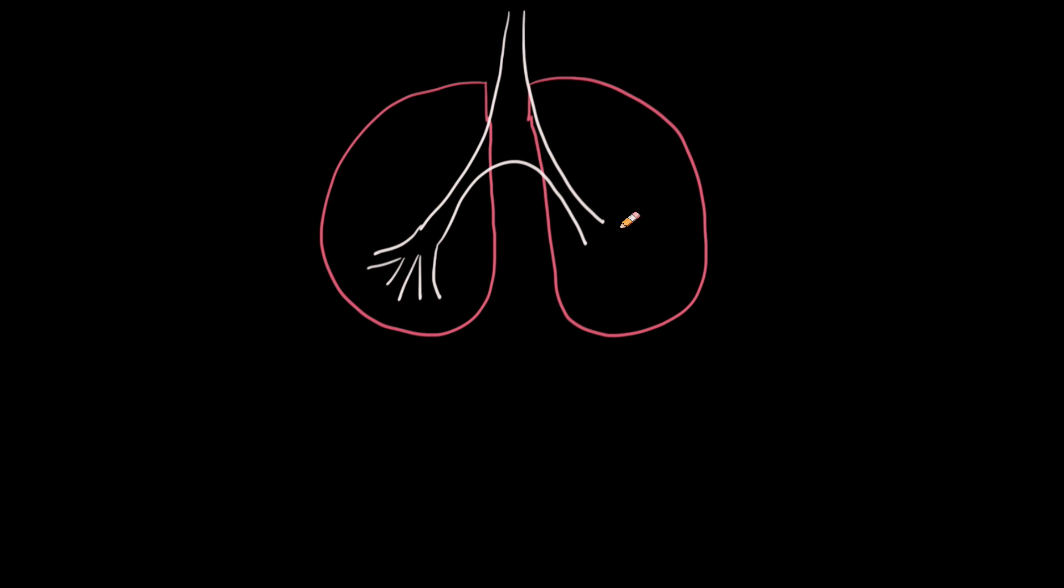You see me making the main airways and now drawing our bronchioles, which are smaller airways. At the bottom of our airways we have these air sacs. I'll pick a light color for our air sacs, and we know that these are called our alveoli. I'm putting some on my right and now my left lung, making them kind of like little grapes.